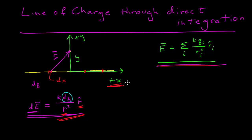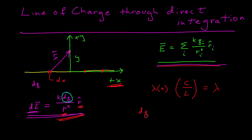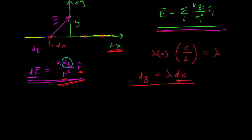The first thing we do is introduce the concept of charge density. The charge density in one dimension is what we call lambda — it's a linear charge density. This gives us the charge per unit length along the line of charge, so it has units of charge per length. We're going to assume this is constant, so lambda is just a constant. The small amount of charge within some very small length is equal to the density times that length: dq = λ dx.